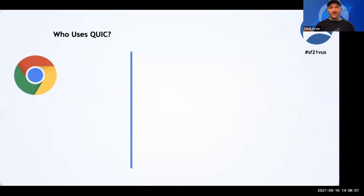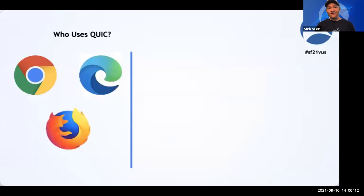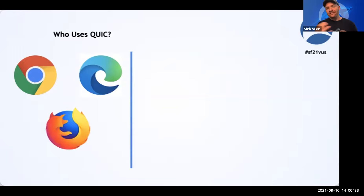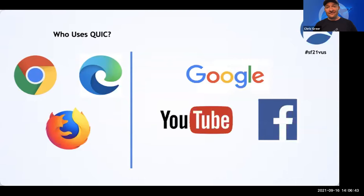QUIC is not brand new — it's actually been around for a while and is already built into several browsers. Several different services over the web are already using it. It's built into Chrome, Edge, Firefox, and even Safari has a plugin. Browsers have been building this into their functionality for a while. The thing that has been waiting is to actually flip that switch to make it the default. On the service side, Google services, YouTube, Facebook, even mobile apps have been going through some testing with QUIC.